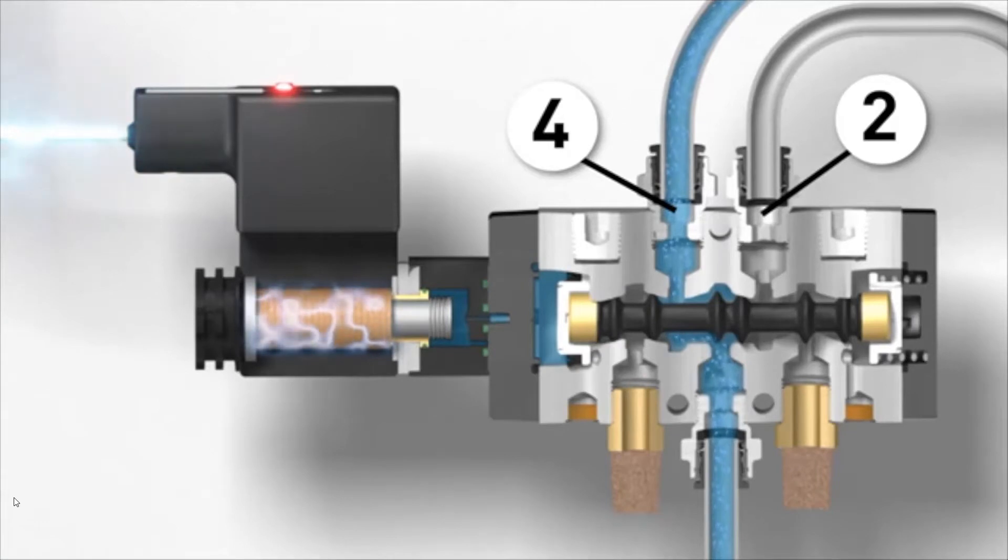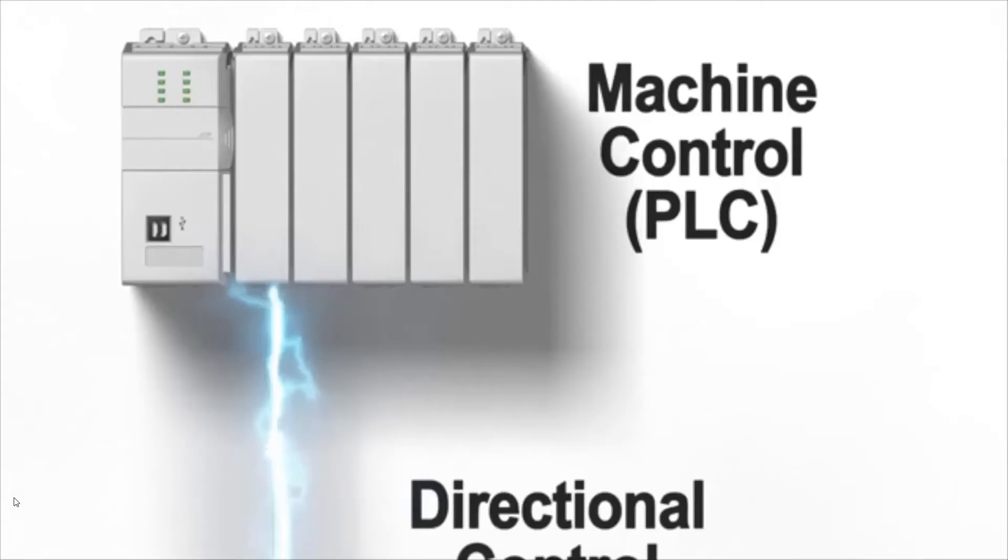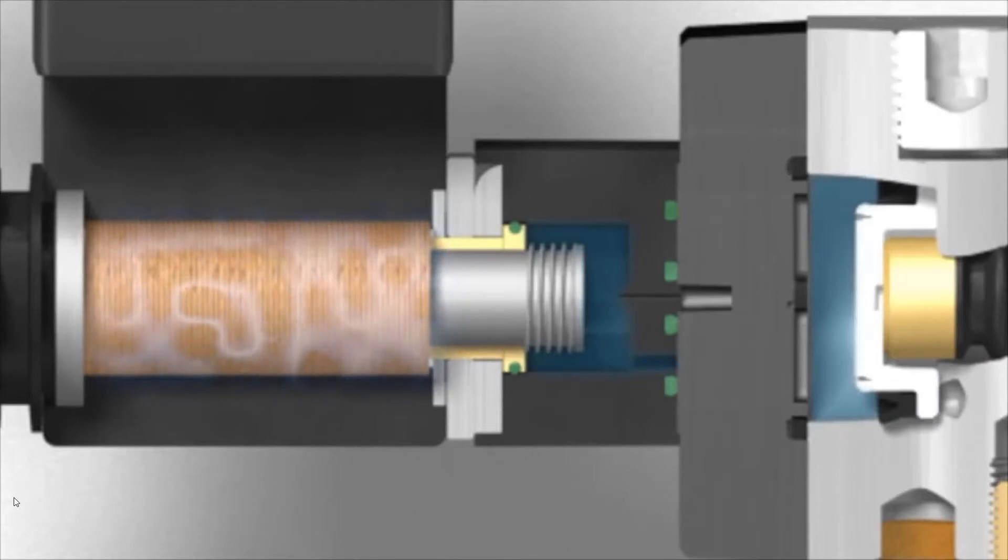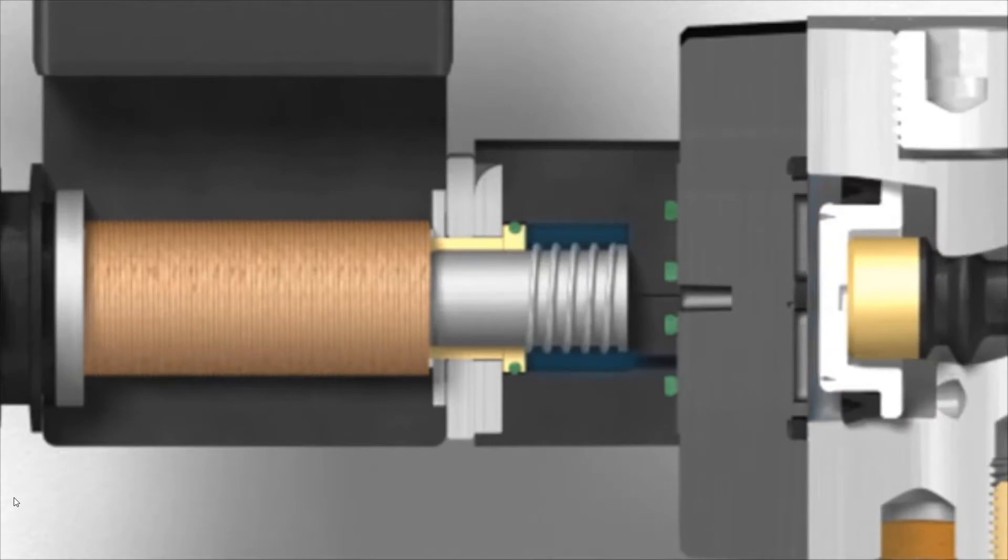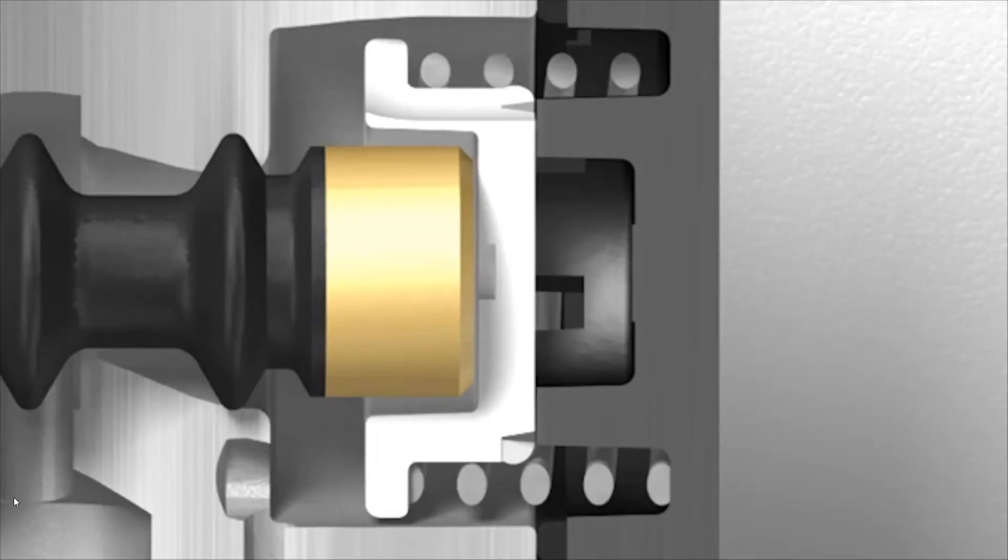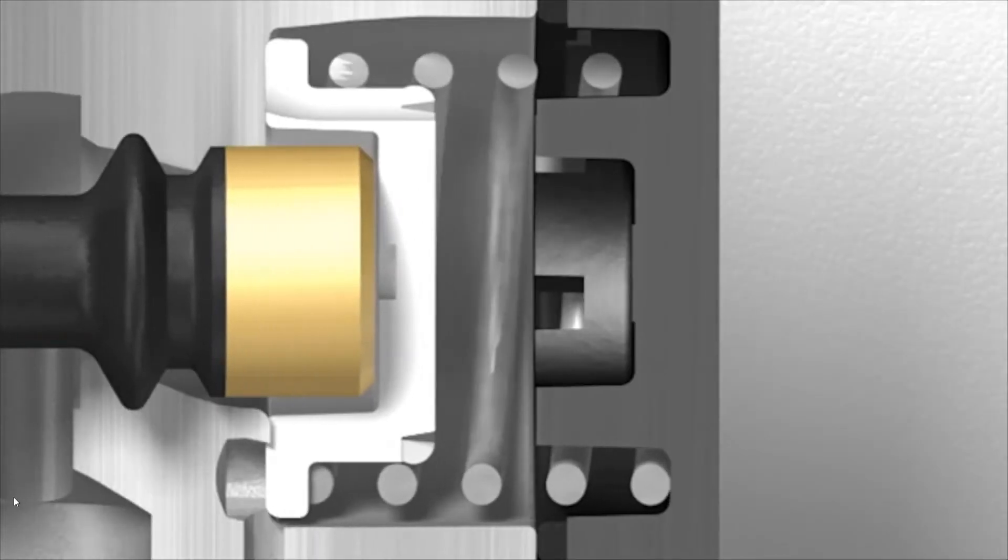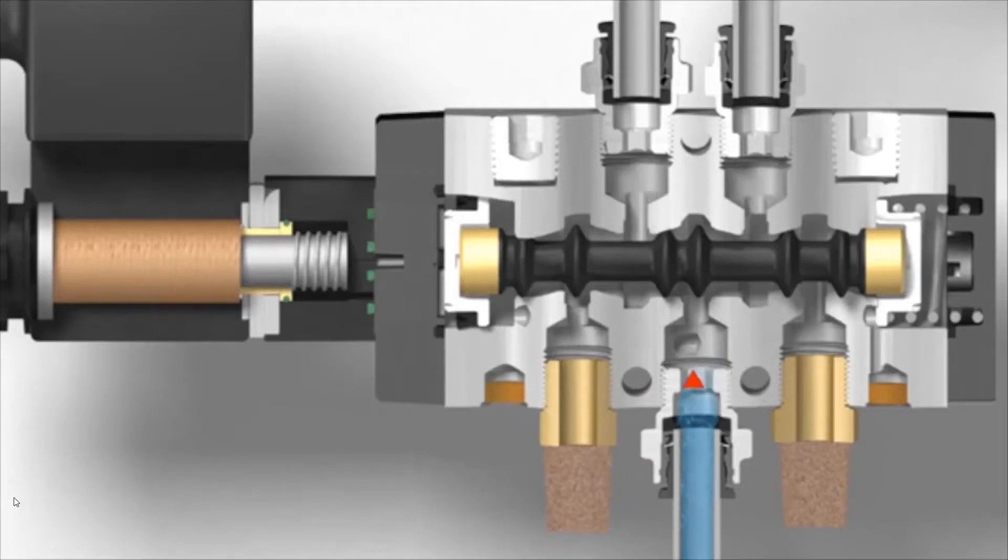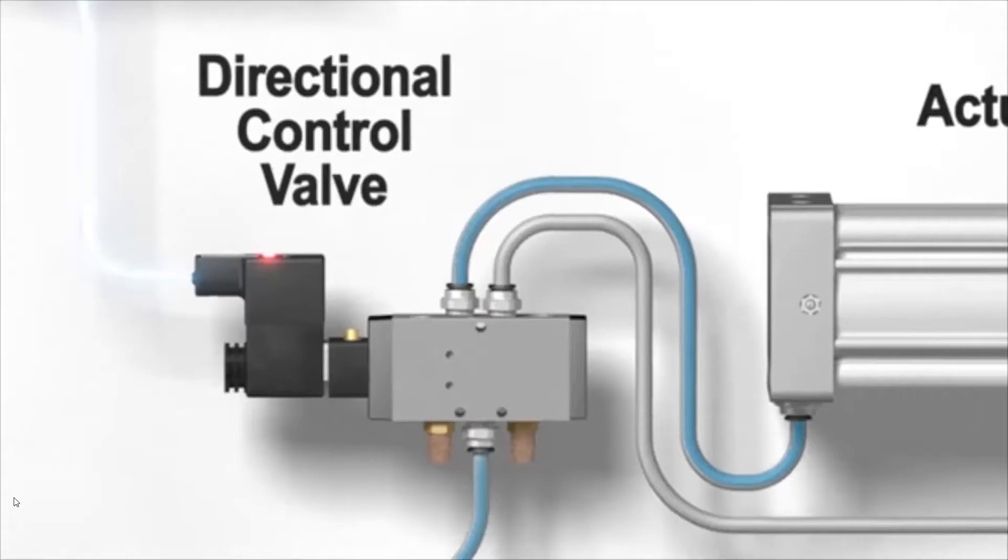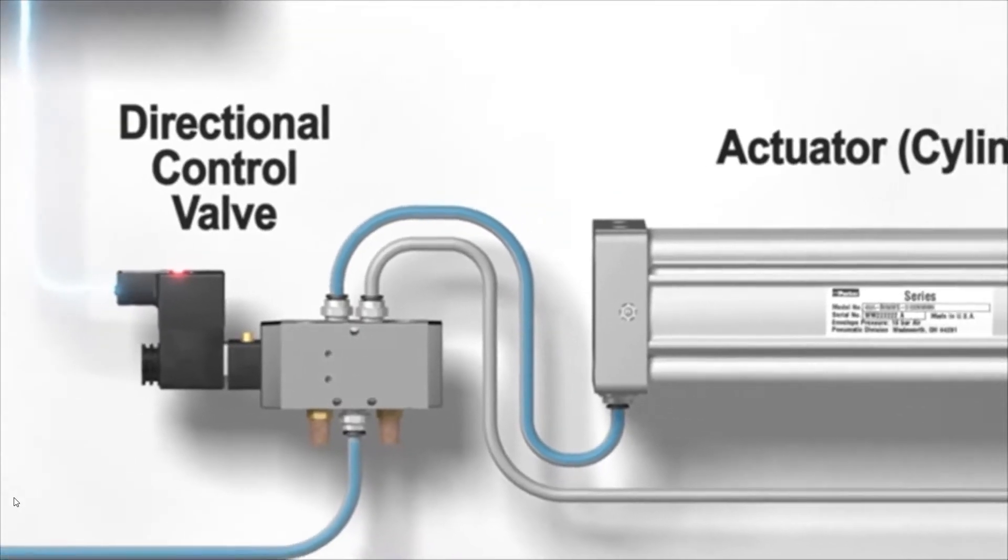When the signal from the PLC is removed, the force generated by the electromagnet is also removed, at which point the spring on the plunger returns it to its normal state, which removes the air signal that is pushing on the spool. The spring on the opposite end will return the spool to its default position once again, directing air back out the number two working port. The PLC can now direct air to whichever port is needed, whenever it is needed.